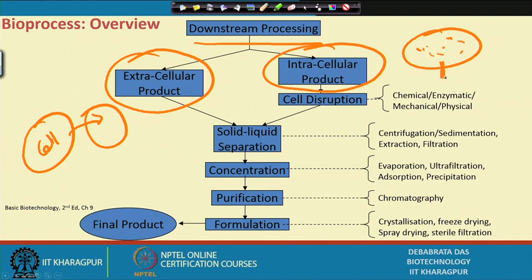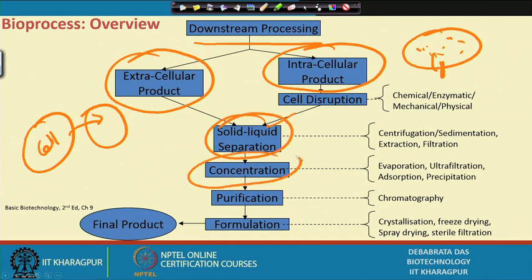For intracellular products, the product is present inside the cell, so we must break the cell wall so the product comes out and can then be purified. The general process flow involves solid-liquid separation, then concentration, then purification, then formulation to obtain the final product.